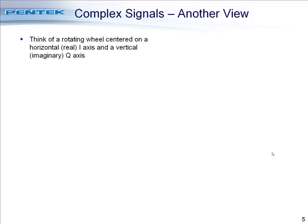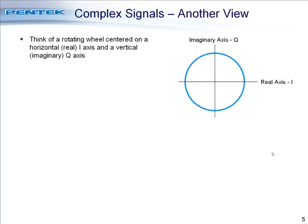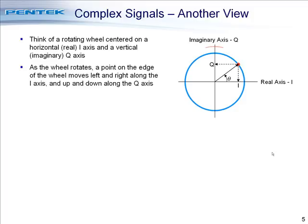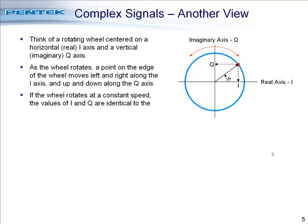In order to better understand complex signals, we're going to present another view to help make it clearer. Think of a rotating wheel centered on a horizontal real, or I axis, and a vertical imaginary Q axis. As the wheel rotates, a point on the edge of the wheel moves left and right along the I axis and up and down along the Q axis. If the wheel rotates at a constant speed, the values of I and Q are identical to the sine wave plots we looked at, 90 degrees out of phase.